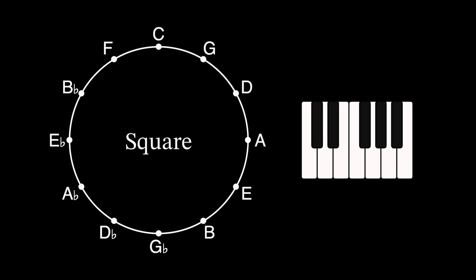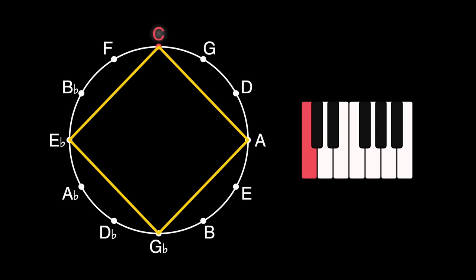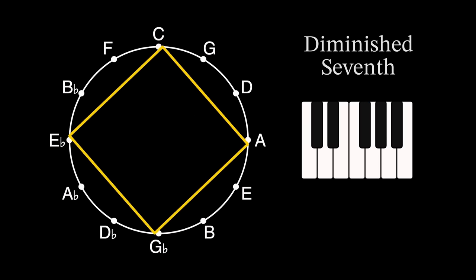With a square, we get another symmetrical chord, a diminished seventh chord, which is just minor thirds stacked on top of each other.